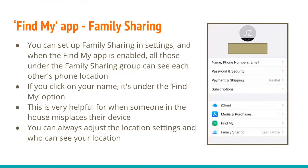Find My App also involves family sharing. You can set it up in settings, and when your Find My App is enabled, all of the people under the family sharing group can see each other's phone location. If you click on your name, it is under the Find My option. It is very helpful for when someone in the house misplaces their device. You can always adjust the location settings and adjust who can see your location.